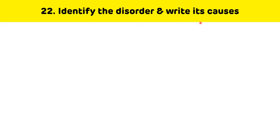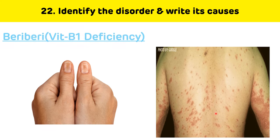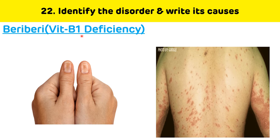Identify the disorder and write its causes. This disorder is associated with vitamin B1 deficiency. There are horizontal ridges on the nails and pigmentation. It is beriberi, which occurs due to vitamin B1 deficiency. There are three types of beriberi: dry beriberi, wet beriberi, and mixed beriberi. Dry beriberi mostly affects the CNS, and wet beriberi mostly affects the cardiovascular system.